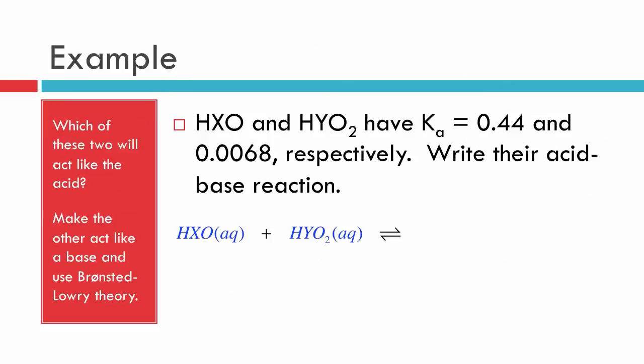So here's an example. Suppose I have some made-up acid, HXO, and another one, HYO2, and you're given the equilibrium constants. One's 0.44, and the other one is 6.8 times 10 to the minus third. When we look at this and we have a reaction between these two species, we can see that it's obvious that the HXO with this large 0.44 equilibrium constant is the stronger of the two acids. Therefore, it will act like an acid, and the HYO2, the other species, will act like a base.